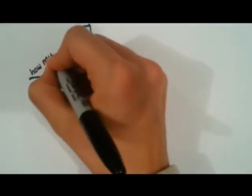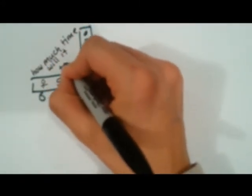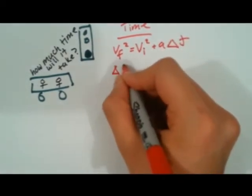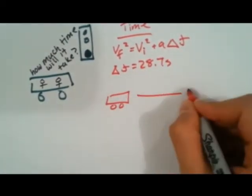Nick asked, so then how much time will it take? Time is calculated from Vf squared equals Vi squared plus A delta T. It would take 28.7 seconds to get from here to Sports Check.